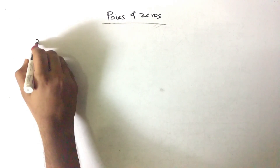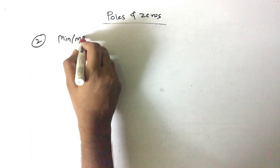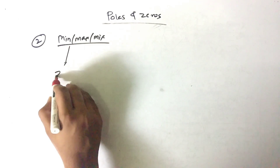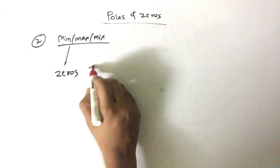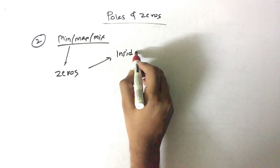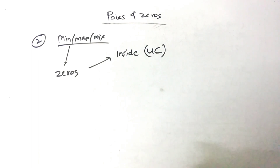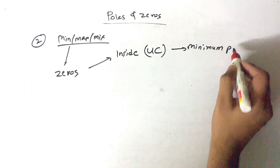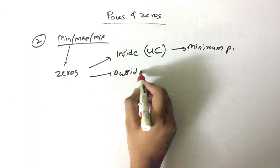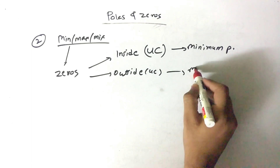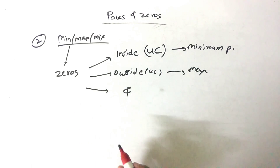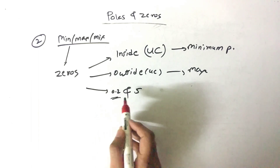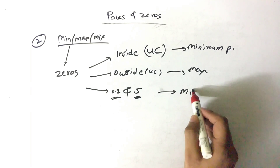The second variety is very simple — that is minimum, maximum, or mixed phase. To find this, we need only the zeros. If a zero is inside the unit circle, it is a minimum phase system. If it is outside the unit circle, it is a maximum phase system. If zeros contain both inside and outside the unit circle — for example, 0.2 and 5 — it is a mixed phase system.